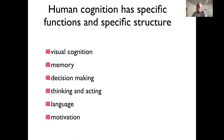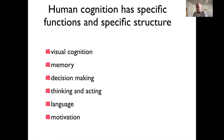I'll take you through the core cognitive functions — the main chapters of a textbook on cognitive psychology. I'll give a panorama of these behaviors: visual cognition, memory, decision making, thinking, acting, language, and motivation. I'll be most detailed about the first few topics and more cursory about language and motivation.